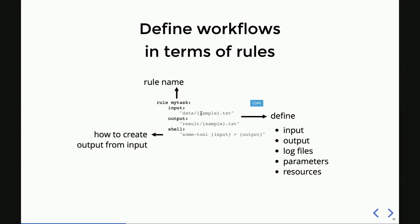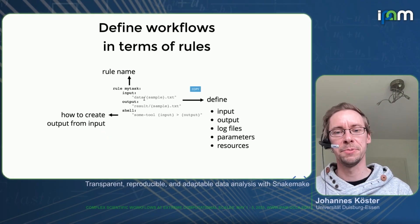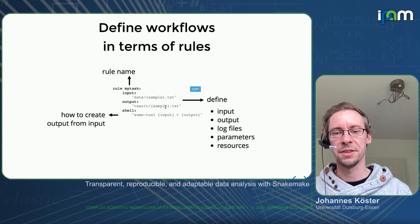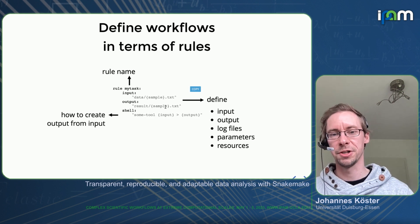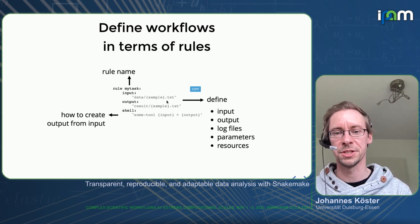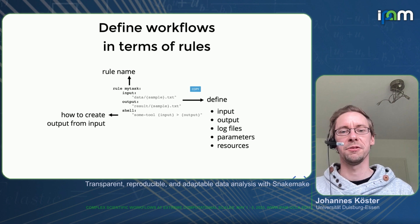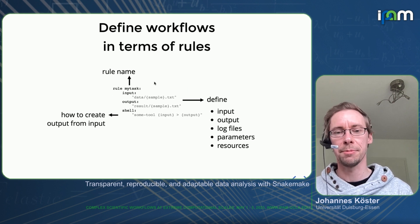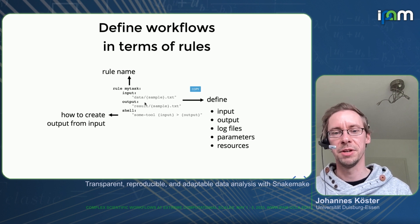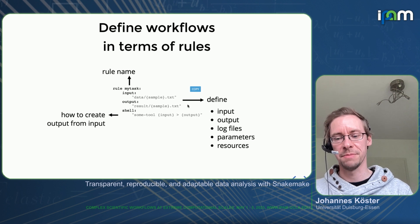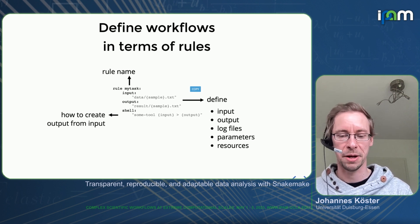Each rule can have a set of input files, a set of output files, and something that describes how to obtain the output from the input — which can be the invocation of a command line tool, a script, or a notebook. Input and output files don't need to be concrete but can contain wildcards, like a 'sample' placeholder that is variable and can change for different data sets. You can use multiple wildcards to scan a parameter space. Outside and even inside such rules you can write arbitrary Python code, making it a very powerful system.